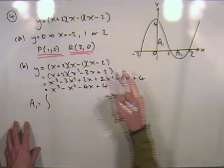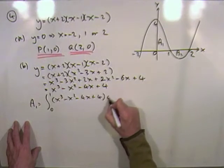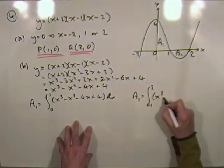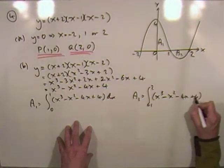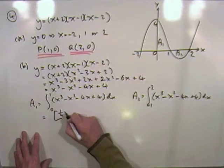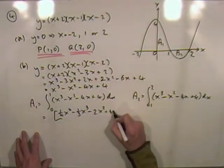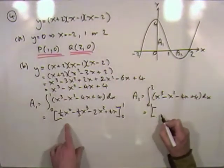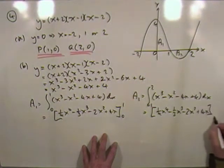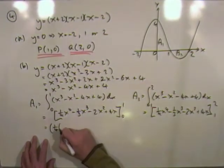Area one is the integral from zero to one of x³ − x² − 4x + 4 dx, and area two is the integral from one to two of the same expression dx. Integrating gives ¼x⁴ − ⅓x³ − 2x² + 4x, evaluated at the respective limits for each area.